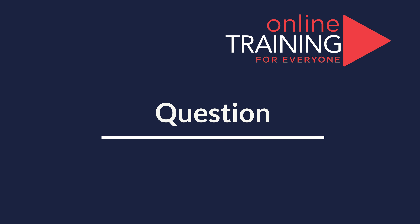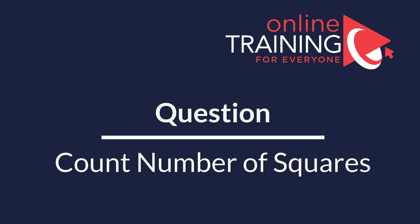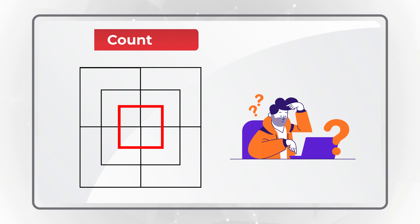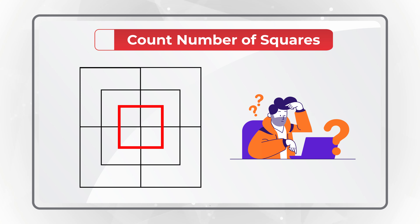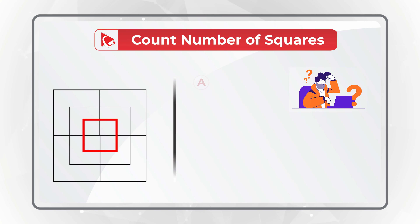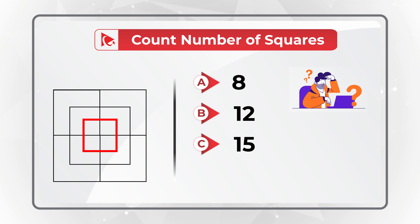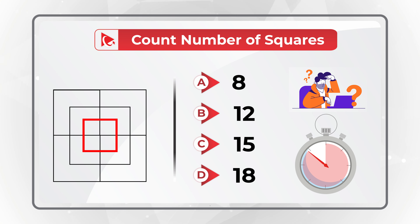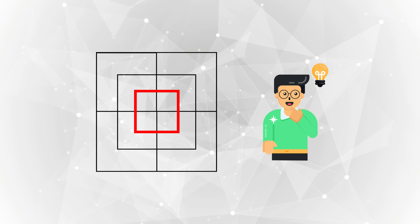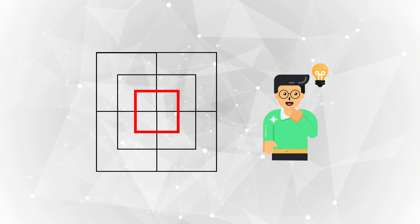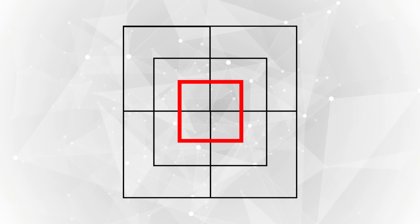Here's one of my favorite questions where you need to count the number of squares presented in the shape. You have four choices: A — 8, B — 12, C — 15 squares, and D — 18 squares. Take a close look at the picture. Nobody is going to give you a tip during the real test, but I'll give you a hint: look at the squares inside the squares.